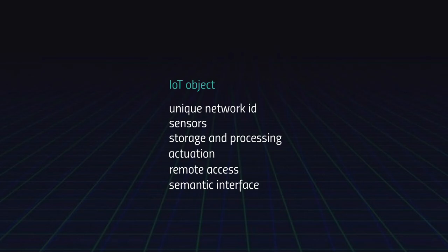An object connected to the Internet of Things must first and foremost have a unique network ID — this is non-negotiable — because it has to be recognized by the network as a unique node. In order to be a unique node it has to have what is called a MAC address, a unique address on the network. So each and every object connected to the internet has a unique network ID that makes it identifiable on the network as a node. Second, the object connected to the Internet of Things must have some sort of sensor that gives it a data interface to materiality and its surroundings.